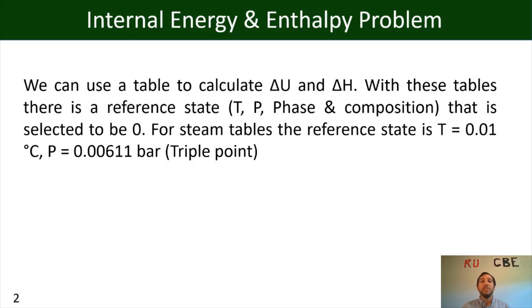And with these tables, there's always going to be a reference state where it specifies a temperature, a pressure, and a phase and composition that will be selected to be zero. And for steam tables, which we're going to get to in lecture 14, the reference state is a temperature of 0.01 degrees Celsius, a pressure of 0.00611 bar. And if you're wondering why those values, it's because that's the triple point for water, which makes it actually a very reasonable location or reference state.